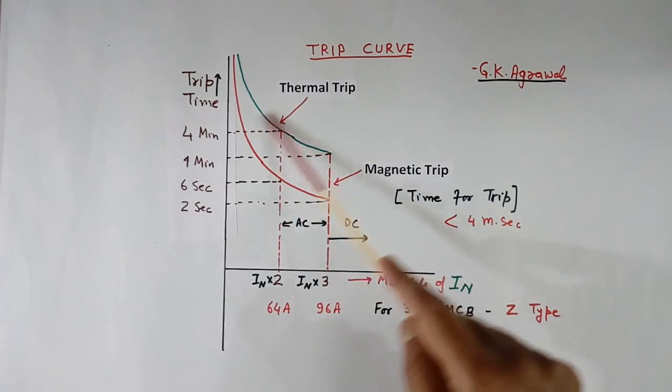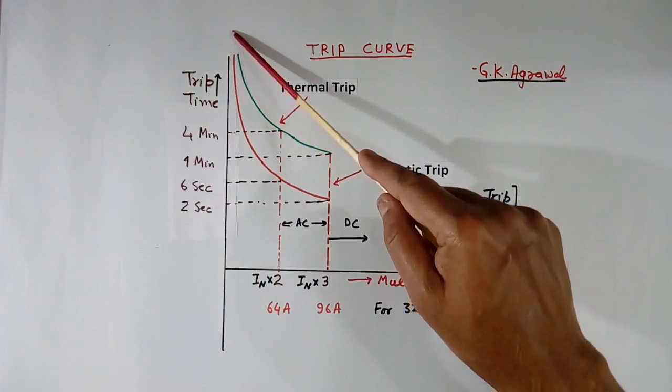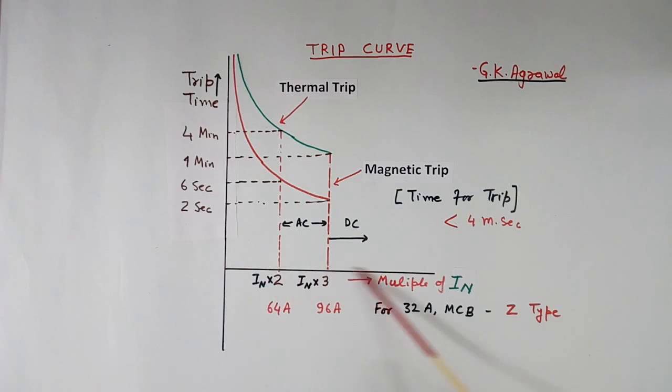This is the trip curve of MCB. This is trip time, this is trip current. Both will be in log scale. This current is written in multiple of IN. IN is nominal current. For example, 2 means IN×2. Suppose IN is 32 ampere for 1 MCB, then this will be 64 ampere, double of this. Similarly 3 means 3 times of this, 96 ampere.